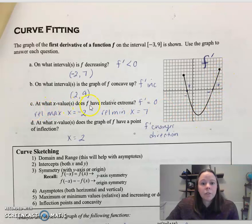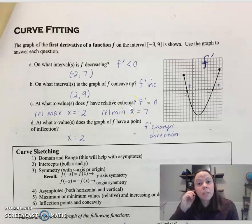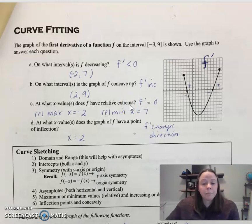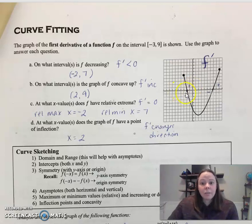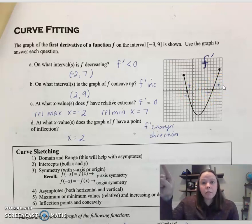At what x-value or values does f have a relative extrema? You need to think critical numbers — where does the derivative equal zero, and does it change signs? Where does the derivative cross the x-axis? You can see it goes from positive to negative, meaning the function goes from increasing to decreasing at negative two — that's a relative max. And then here it goes from negative to positive, so decreasing to increasing — you have a relative min at seven.